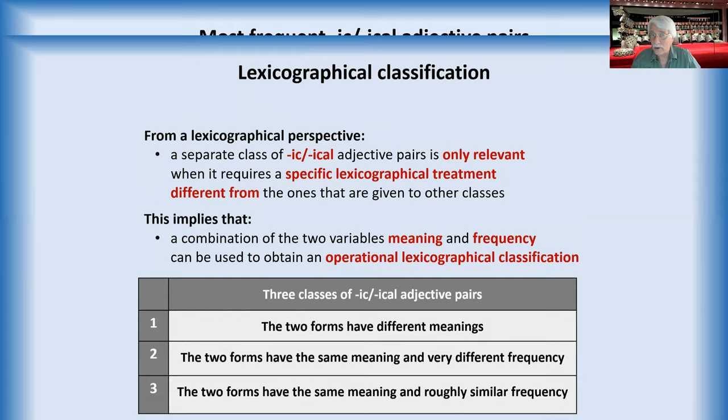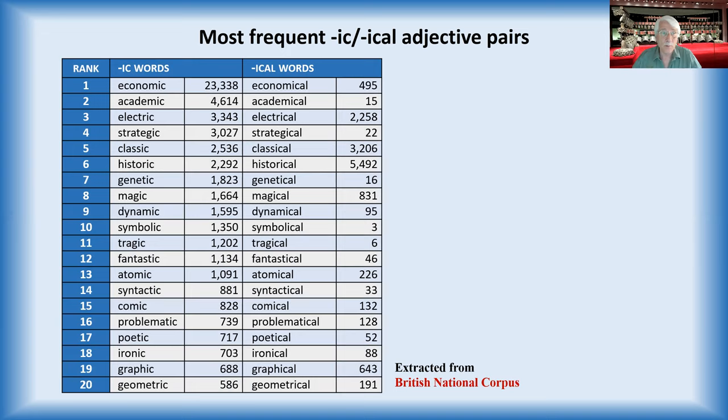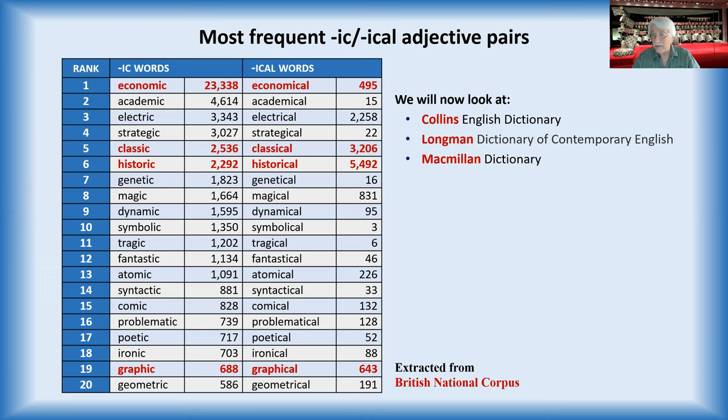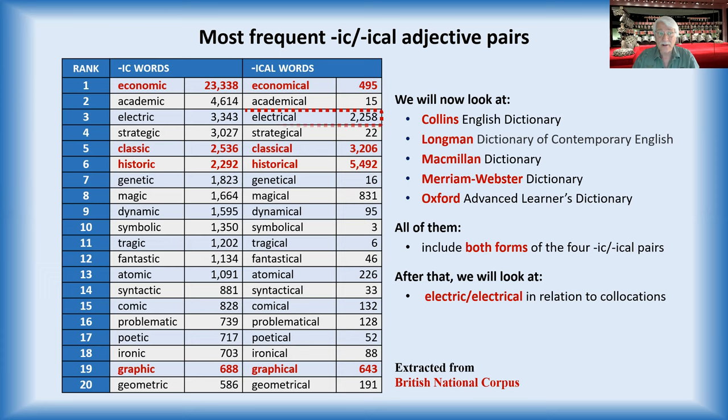Here we see the 20 most frequent adjective pairs. We have extracted this from the British National Corpus and listed it by the -ic adjective. And we'll make an analysis of these four ones in five prestigious English dictionaries. And after that, we'll briefly look at electric and electrical, which is different. And this is what we're going to do.